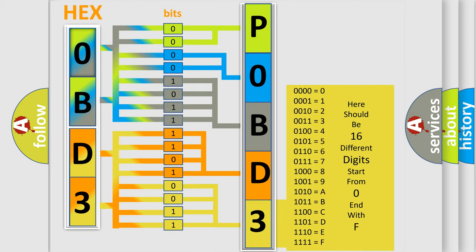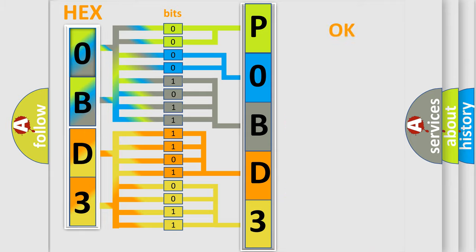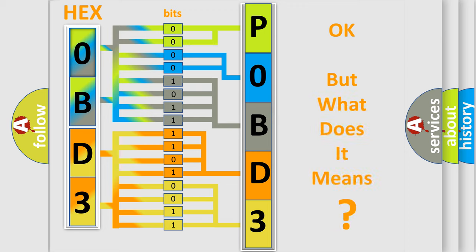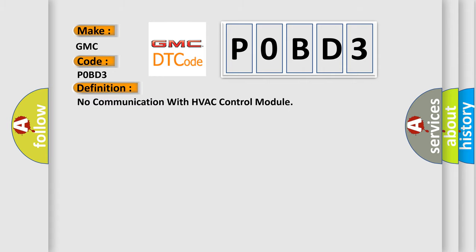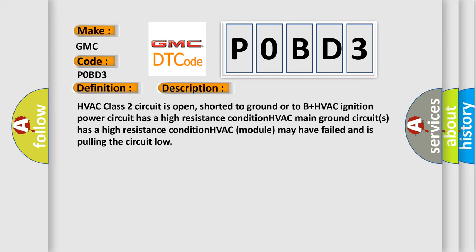We now know how the diagnostic tool translates the received information into a more comprehensible format. The number itself does not make sense unless we can assign meaning to what it actually expresses. So, what does diagnostic trouble code P0BD3 interpret specifically for GMC vehicles? The basic definition is: no communication with HVAC control module. The short description of this DTC code is: HVAC class 2 circuit is open, shorted to ground, or to B+; HVAC ignition power circuit has a high resistance condition; HVAC main ground circuit has a high resistance condition; or the HVAC module may have failed and is pulling the circuit low.